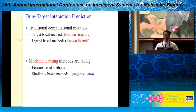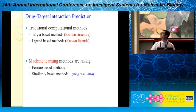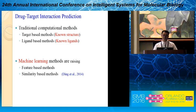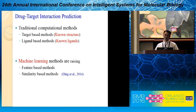The other method is a ligand-based method. In this case, you need to load some known ligands and then try to modify their structure. Most recently, machine learning-based methods have been proposed to target these problems. There are two different categories of machine learning-based methods: feature-based methods and similarity-based methods.